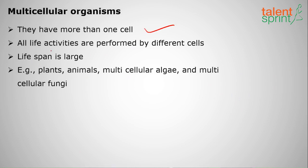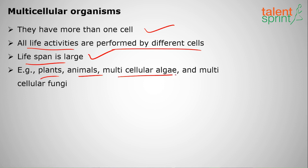Next are multicellular organisms. They have more than one cell, and all life activities are performed by various different specialized cells, unlike unicellular organisms. Their lifespan is large. Plants, animals, multicellular algae, and multicellular fungi are the best examples.